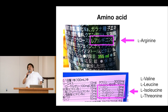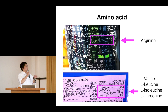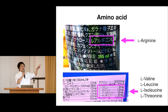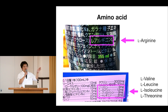My story today is about the amino acid. This picture shows the back side of a drink can. There are some materials listed. For example, the upper panel — I marked with a pink line — shows arginine, one of the amino acids. The bottom panel lists four amino acids: valine, leucine, isoleucine, and threonine. For all of these amino acids, you can see the small letter 'L', indicating all are L-amino acids.